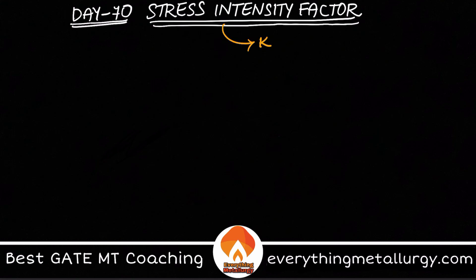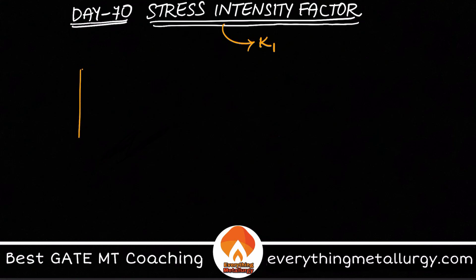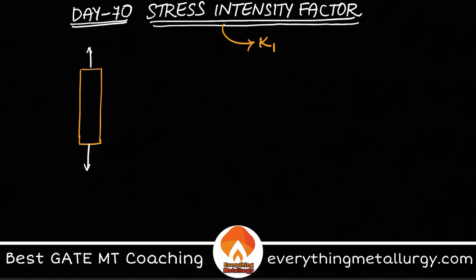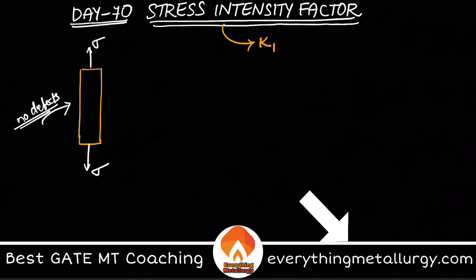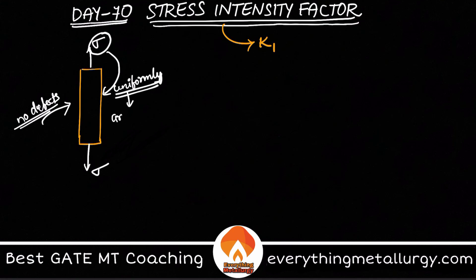The stress intensity factor is basically denoted by K or K1. Let's say we have a small cylindrical rod and you are applying some load sigma on it. If this is a perfect body — meaning there are no defects in the body — then this load is actually distributed uniformly at all locations around the cross section.